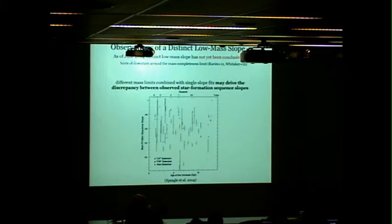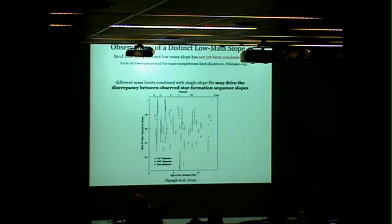This is a plot from Spiegel et al. 2014. It shows that a lot of people have derived a lot of values for the slope in the star forming sequence. One possibility is that maybe there are two slopes. The slope you derive will depend very sensitively on how deep you go in stellar mass. The deeper you go, the closer to unity it's going to be.